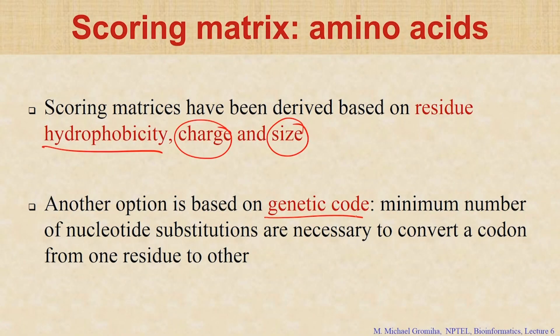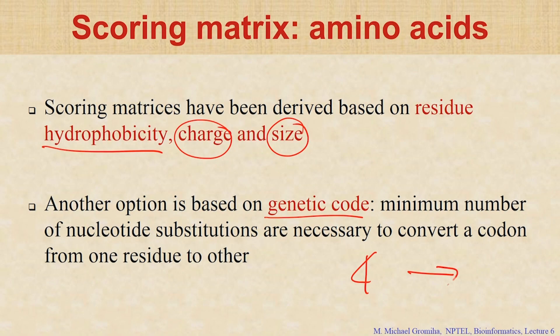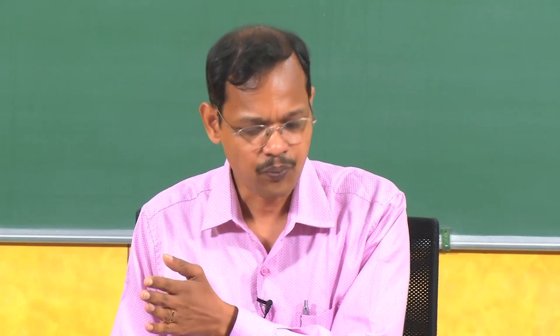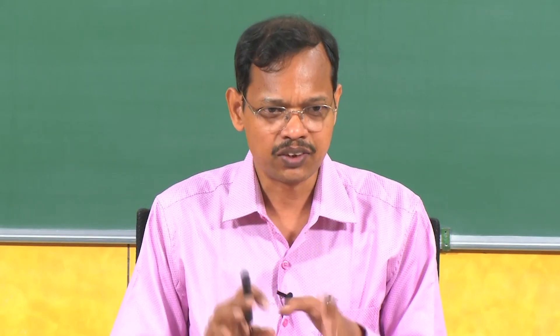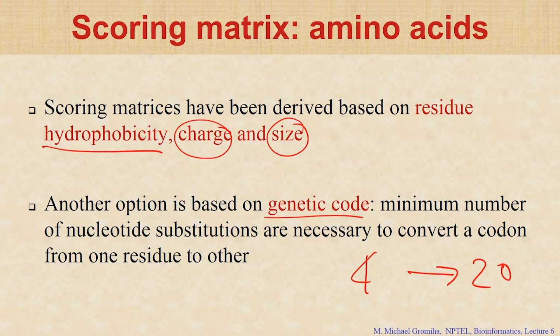Another option is the genetic code — how many nucleotide substitutions are necessary to convert a codon to encode a different amino acid. Totally 4 nucleotides — A, T, C, G — but 20 amino acids. In this case, some require only 1 mutation, sometimes there are 2. Depending upon the number of substitutions in the nucleotide that lead to the amino acid, we can group them accordingly: single substitutions grouped together, 2 substitutions grouped together. This can help you reliably align protein sequences.